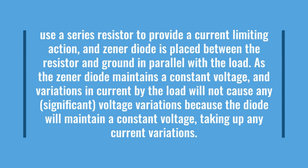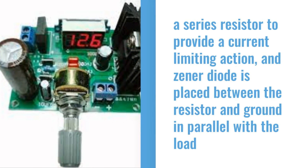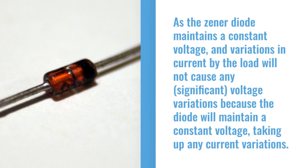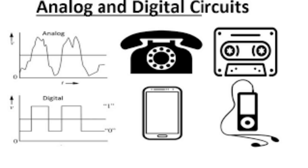The shunt regulator is, however, simpler — sometimes consisting of just a voltage reference diode — and is used in very low powered circuits where the wasted current is too small to be of concern. These circuits use a series resistor to provide current limiting action, and a Zener diode is placed between the resistor and ground in parallel with the load. As the Zener diode maintains a constant voltage, variations in current by the load will not cause significant voltage variations. Shunt regulators are used in low output voltage switching power supplies, current source and sync circuits, error amplifiers, adjustable voltage or current linear and switching power supplies, analog and digital circuits requiring precision references, and precision current limiters.